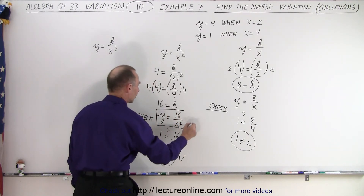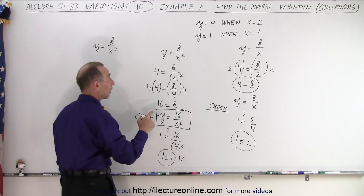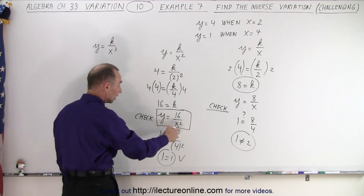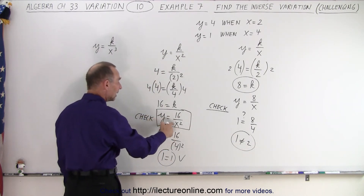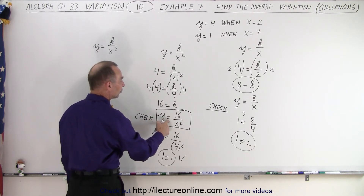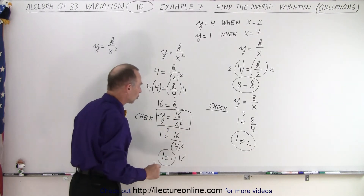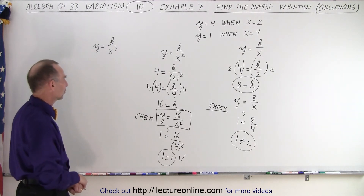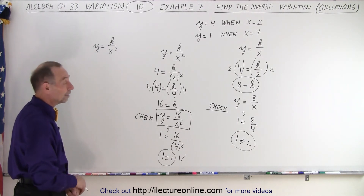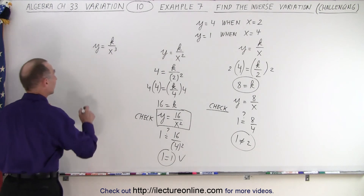Yes, we have the right equation. This is the correct equation that gives us the proper inverse variation relationship between y and x — y is inversely related to 1 over x squared, or in this case 16 over x squared.